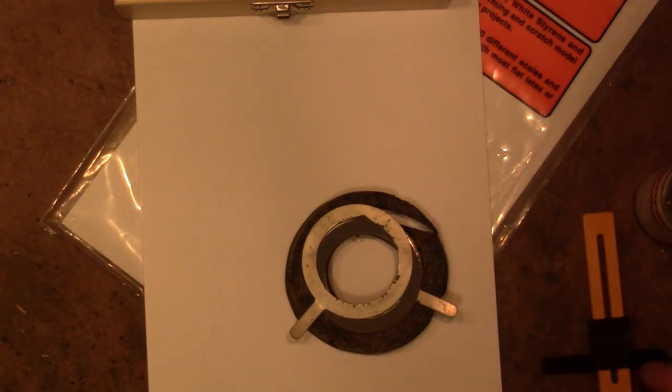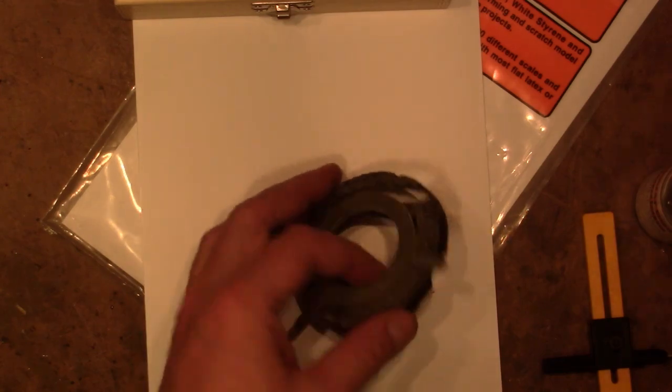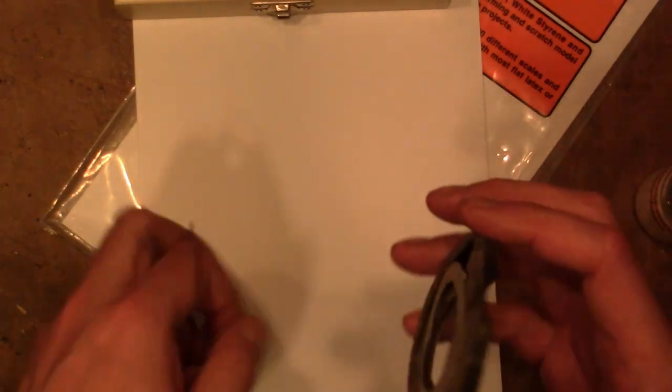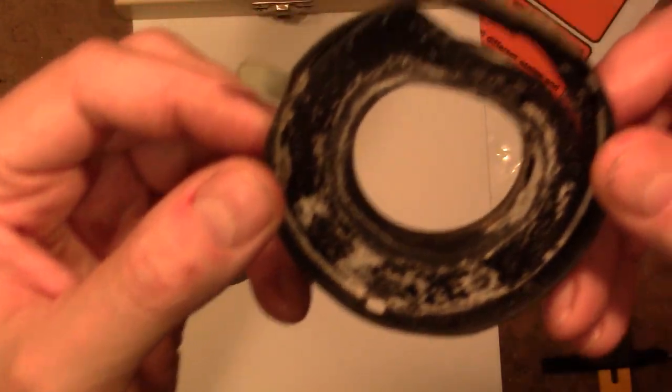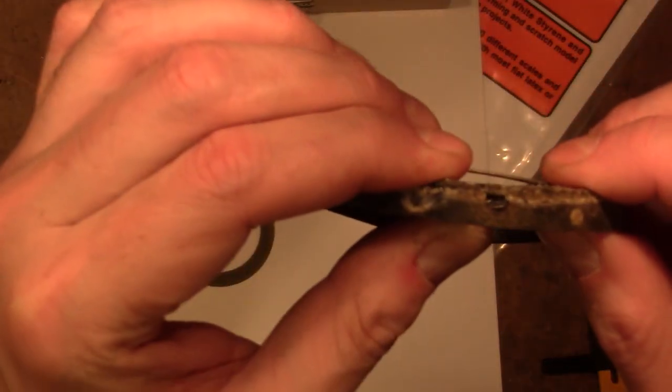Alright, time has come to try fabricating a new yoke cover. So here's the original made out of some type of plastic that deteriorates over time quite badly.